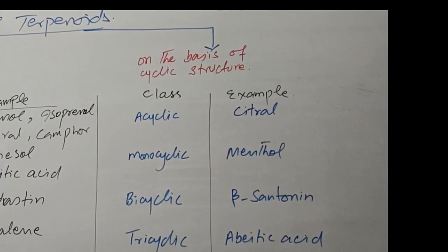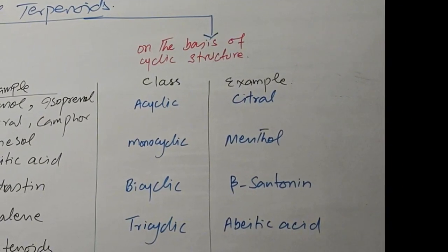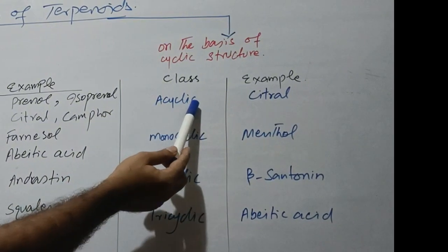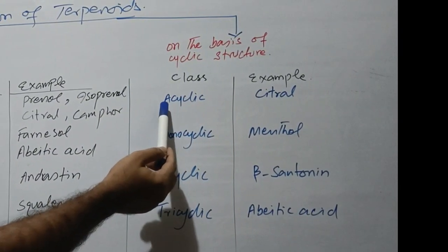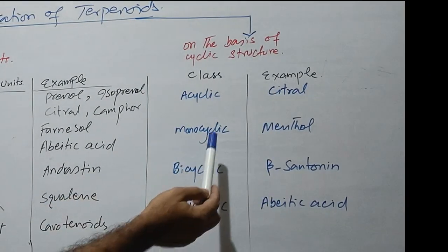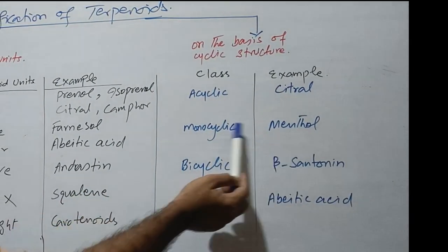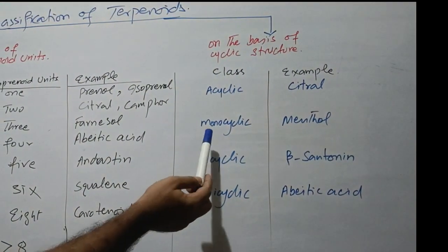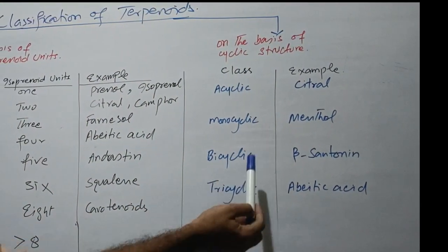On the basis of presence of cyclic structure, when the terpenoids do not contain any ring structure then those include in acyclic terpenoids, for example citral. And in menthol one cyclic ring is present. So these are classified as monocyclic terpenoids.